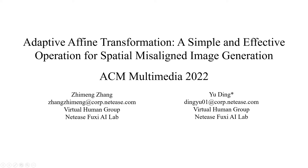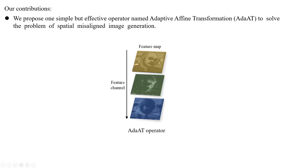Adaptive Affine Transformation: a simple and effective operation for spatial misaligned image generation. In this paper, we first propose one simple but effective operator named adaptive affine transformation to solve the problem of spatial misaligned image generation. As shown in the image below, different colors represent different affine transformations. Adaptive affine transformation realizes feature spatial alignment through different spatial affine transformations in different feature channels.